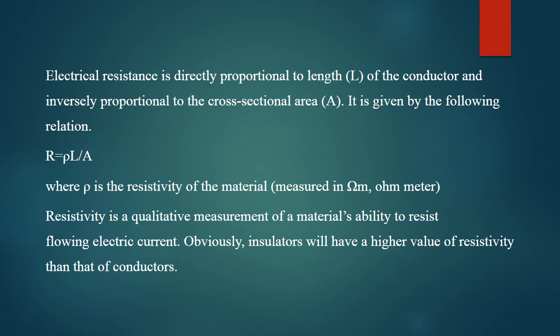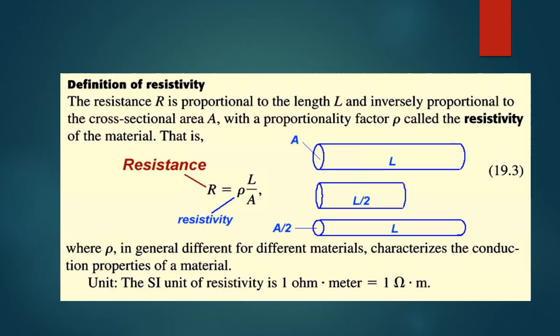You can see the relation: R is equal to Rho L by A. Rho is the resistivity of the material — it changes according to the material and is a constant value for a particular material. The length of the conductor is directly proportional; if the length increases, the resistance value also increases. It is inversely proportional to the cross-sectional area. Where the cross-sectional area increases, the obstruction offered by the material keeps on decreasing. Resistivity is a qualitative measurement of the material's ability to resist the flow of electric current.